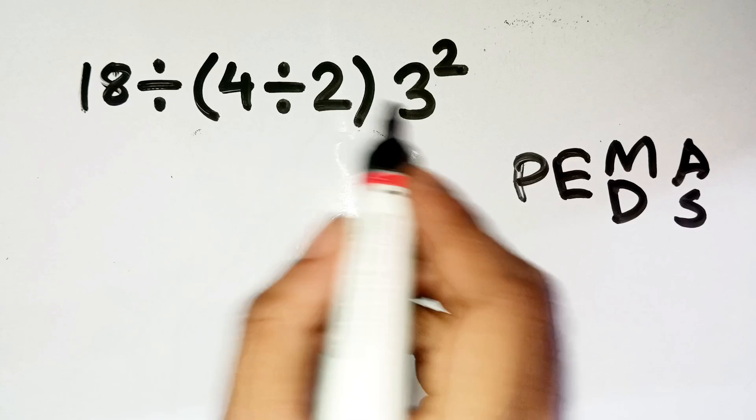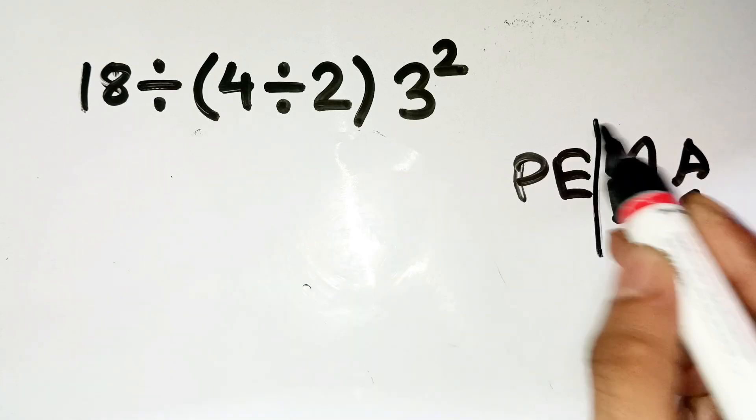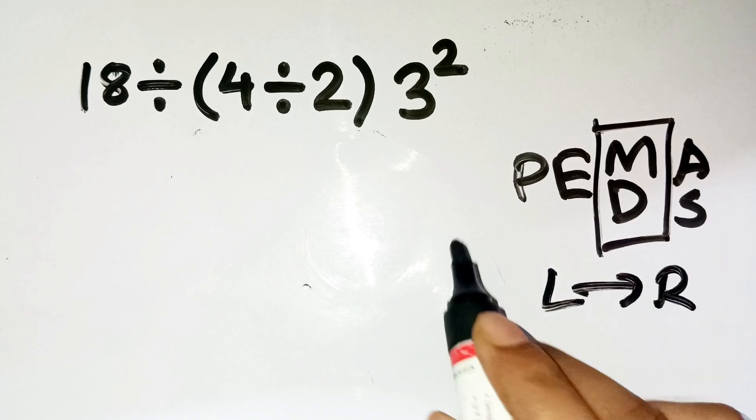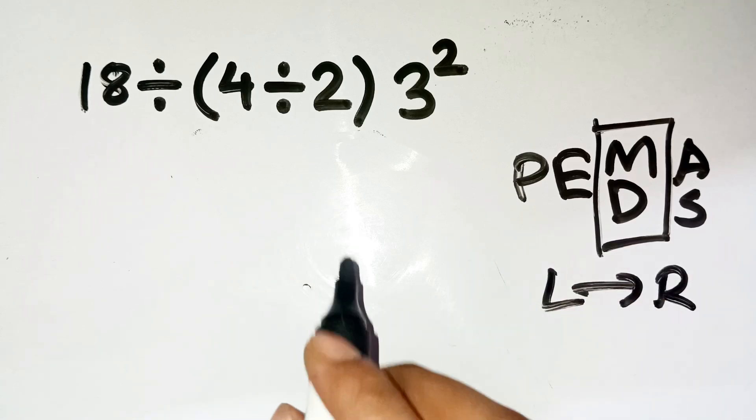Now, here's where people usually get tricked. Multiplication and division are on the same level. That means we go from left to right, not all multiplication before division. So let's solve it carefully.